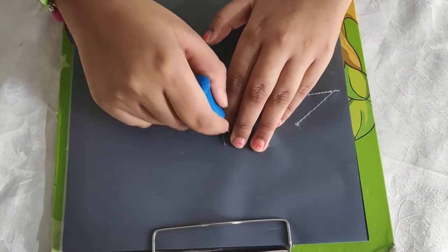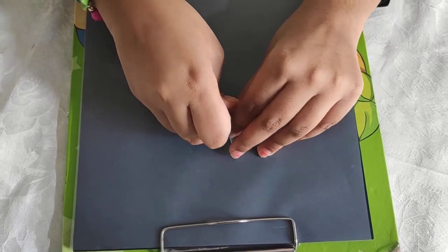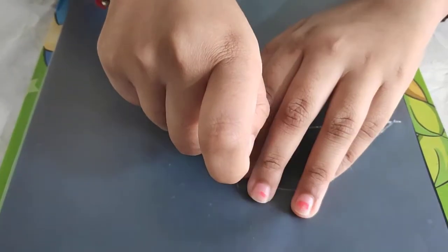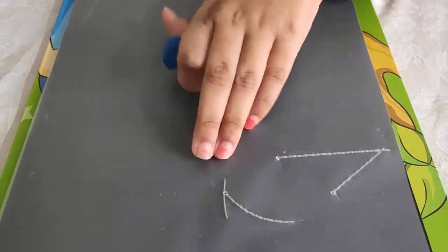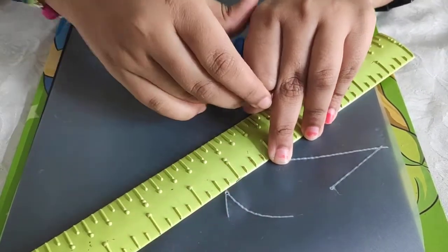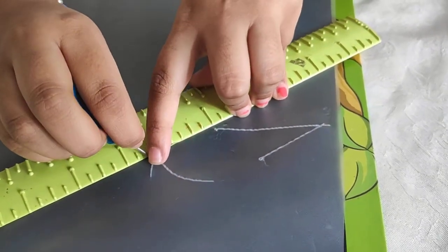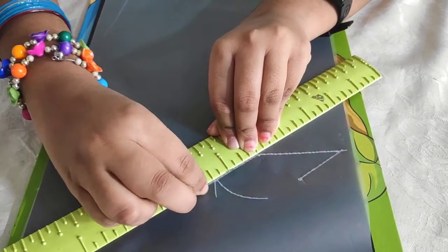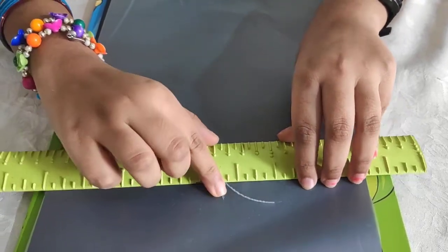Now I'm going to mark this point as D. Now I'm going to join point A and point D using my scale. Now I'm going to join point C and point D.